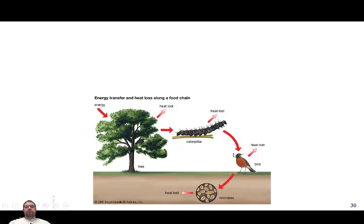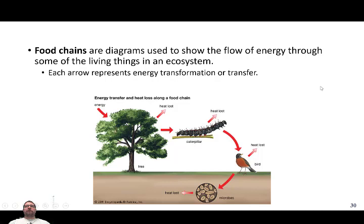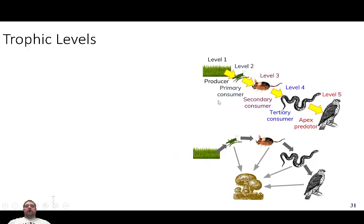Only a portion of that energy is left for the microbes when this bird dies. The microbes will also lose heat. So a lot of energy is lost to heat at each step. Food chains are very simplistic — they show the direction that energy flows through the system. Typically they don't show the specific species involved; they just show the direction of energy flowing. Food chains often indicate the trophic level: primary producer, primary consumer, secondary consumer, tertiary consumer, or apex predator.